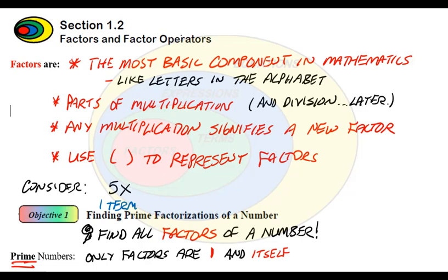The factors of this term would be the parts of multiplication. So 5 would be one of the factors. So I'm going to use a parenthesis and then another parenthesis for x. So when I look at factors, I want to use parentheses to represent them and work with them. So keep consistent with working with that component. So in mathematics, when I'm working with factors, I'm always going to use parentheses to separate them.